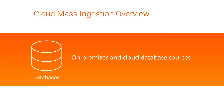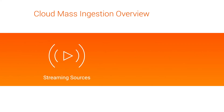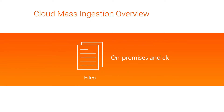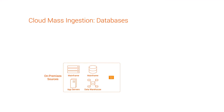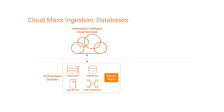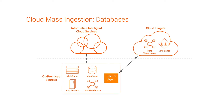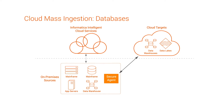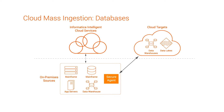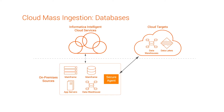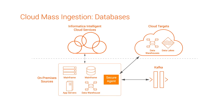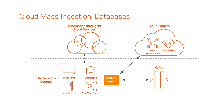The three ingestion types are: Databases for on-premises and cloud database sources, Streaming for streaming and IoT data sources, and Files for on-premises and cloud files. With MassIngestion Databases, you ingest data from your database or data warehouse sources, load data warehouse, data lake, or messaging system targets such as Snowflake, Azure Synapse Analytics, Amazon S3, Microsoft ADLS Gen2, or Kafka, and then capture the changed data and apply it to targets in real-time.